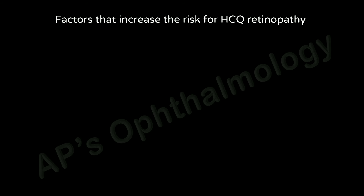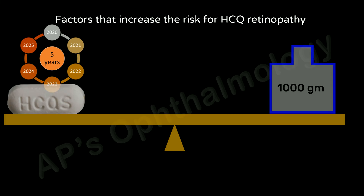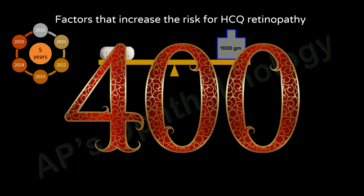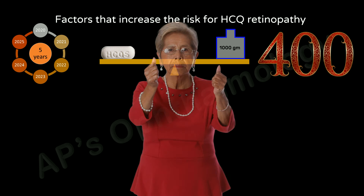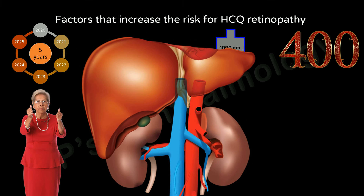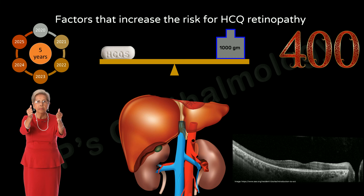What are the factors that increase the risk for hydroxychloroquine retinopathy? Duration of use greater than 5 years, cumulative total dose greater than 1000 grams, greater than 400 mg per day of hydroxychloroquine — or for shorter individuals, greater than 6.5 mg per kg ideal body weight — elderly persons, kidney or liver dysfunction, and retinal disease or maculopathy.